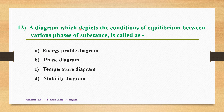Question number twelve: a diagram which depicts the conditions of equilibrium between the various phases of a substance is called as — options are energy profile diagram, phase diagram, temperature diagram, and stability diagram. A diagram that shows conditions of equilibrium between various phases of a substance is called a phase diagram. The correct answer is option B — the phase diagram.